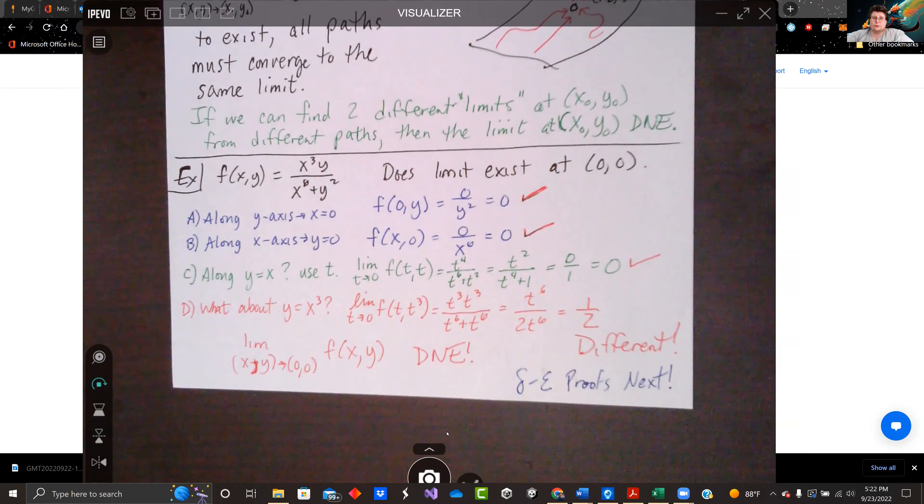What if we take a look at y=x? We'll parameterize with t. So x=t, and since y=x, y=t. And then we'll do the limit as t goes to 0, f(t,t). And we get t⁴/(t⁶+t²). We can see that that goes to 0 also.